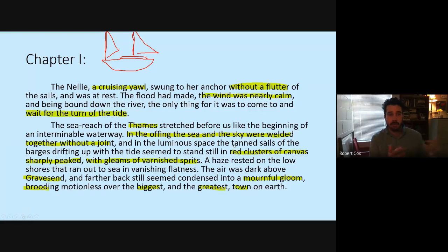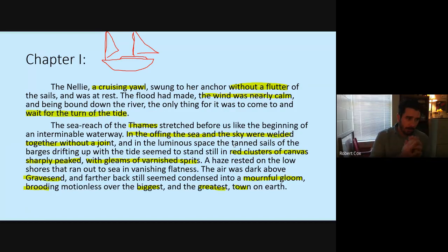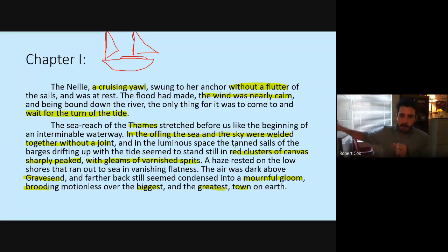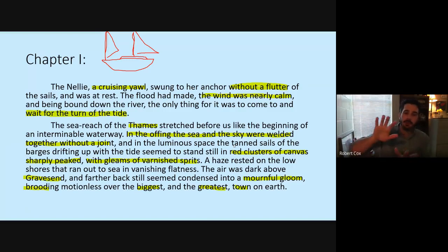This style is called Impressionism — related to the visual art movement. What's going to happen is we won't get detail after detail painting a vivid picture; instead the author gives us the impression: where the light is falling, how it's changing, where the shade is. We paint this picture from that. 'In the offing, the sea and the sky were welded together without a joint.' As the sun is setting, the sky starts to darken to the east and the sea also darkens — these two colors blending together. There's something about this moment where the heavens and the earth are melded into one, a moment of transcendence, meditation, reflection.